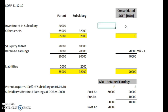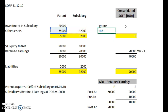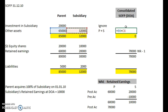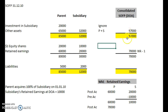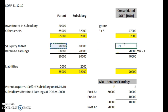We do not include the investment in the subsidiary. Other assets we simply add together — parent plus subsidiary. We ignore the equity shares of the subsidiary, but we include the equity shares of the parent, so that's parent only.